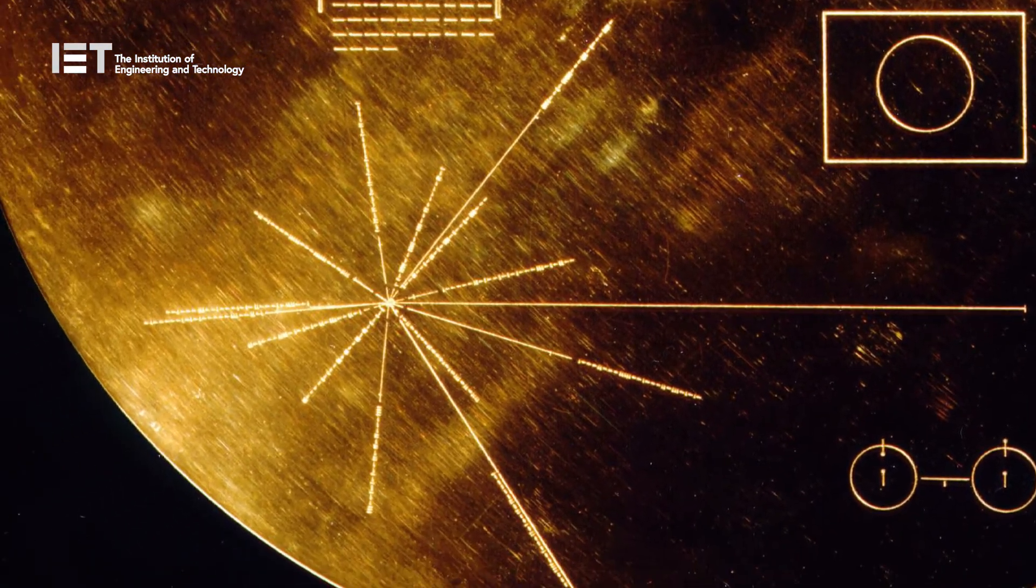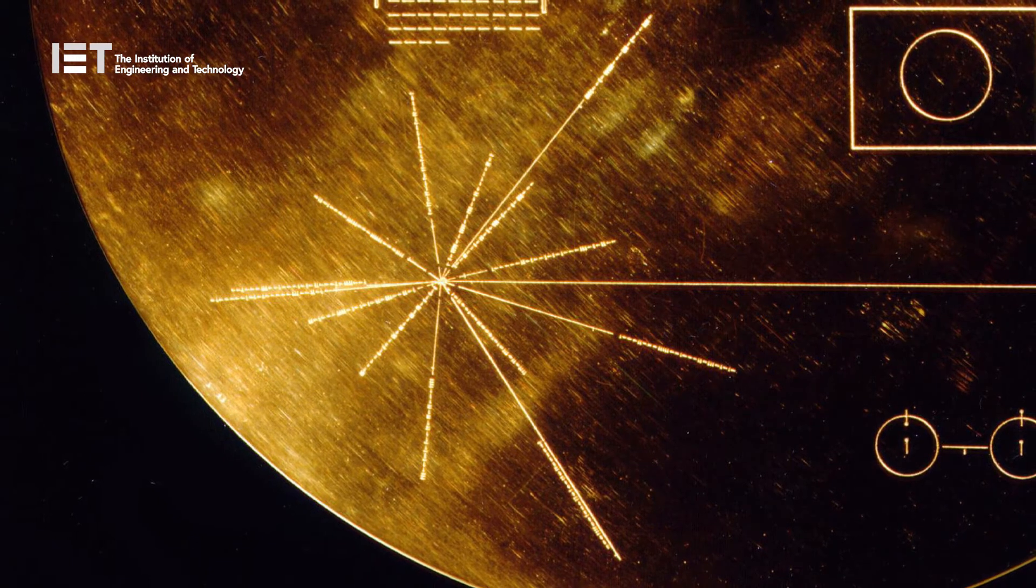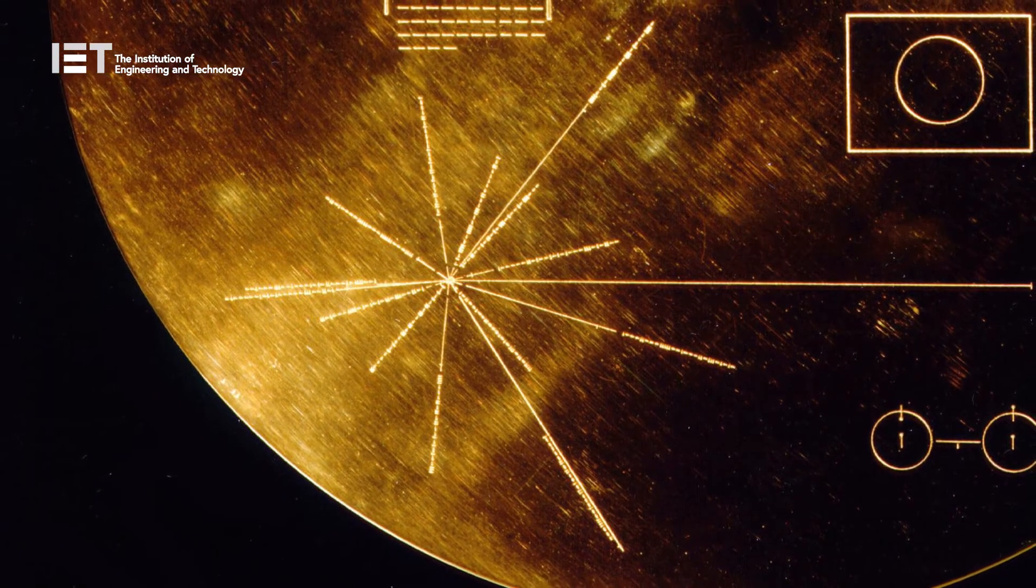This diagram tries to show the location of our sun using 14 pulsars of known direction from our sun. There is binary code defining the frequency of each pulsar.